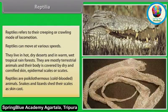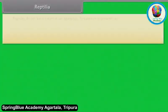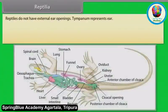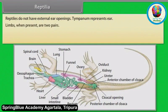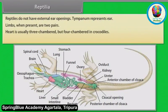Snakes and lizards shed their scales as skin cast. Reptiles do not have external ear openings. Tympanum represents the ear. Limbs, when present, are two pairs. Heart is usually three-chambered but four-chambered in crocodiles.